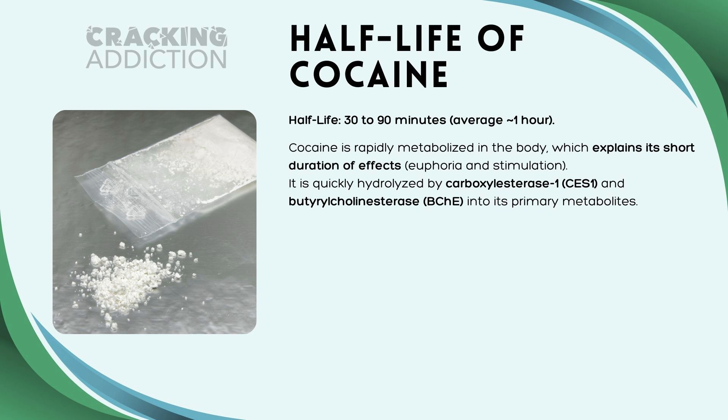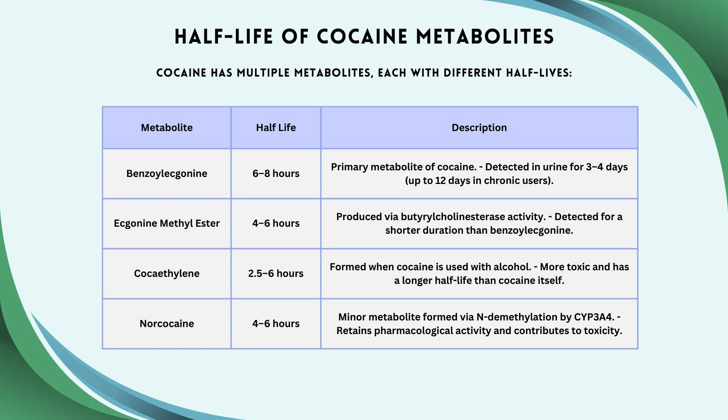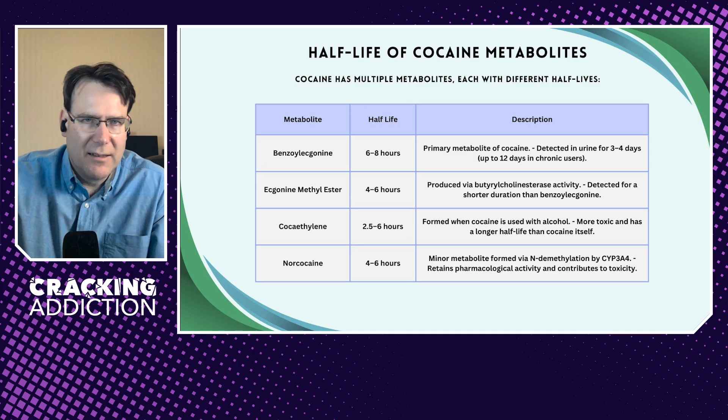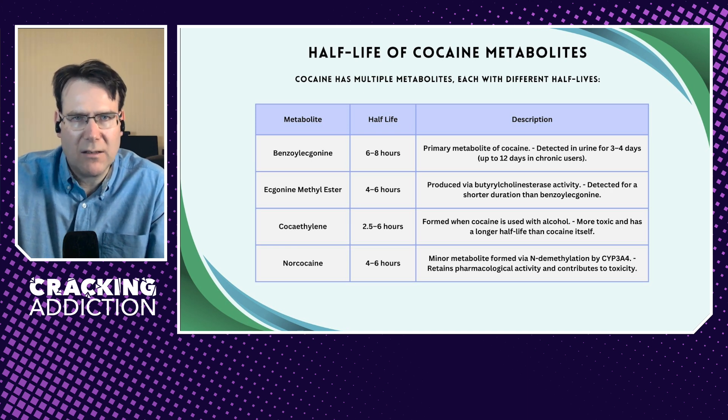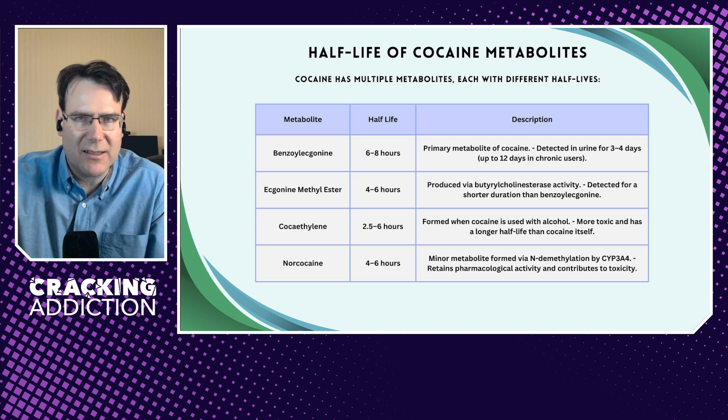The half-life of cocaine is 30 to 90 minutes — on average about an hour. However, we also need to think about the half-life of metabolites. Benzoylecgonine has a half-life of about six to eight hours; it's detected in urine for up to three to four days in occasional users, but up to 10 to 12 days in chronic users. Ecgonine methyl ester has a half-life of four to six hours. Cocaethylene has a half-life of two and a half to six hours. Norcocaine has a half-life of four to six hours. Importantly, the half-life of cocaine's metabolites is longer than the half-life of cocaine itself, and benzoylecgonine — with the longest half-life of six to eight hours — is the one detected in urine.